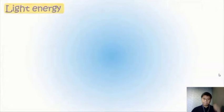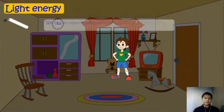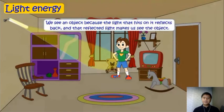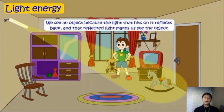Light energy. We see an object because the light that hits an object reflects back, and that reflected light makes us see the object.